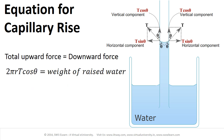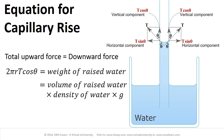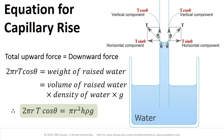At equilibrium: 2πR T cosθ equals the weight of the raised water, which equals the volume of raised water into the density of water into acceleration due to gravity G. Therefore, 2πR T cosθ equal to πR² into H into ρ into G.